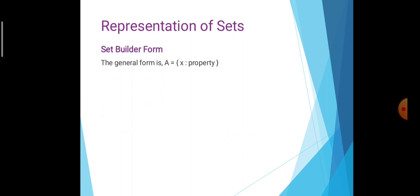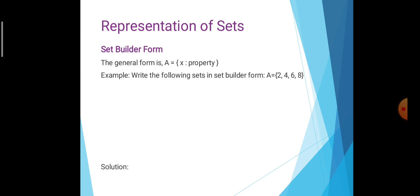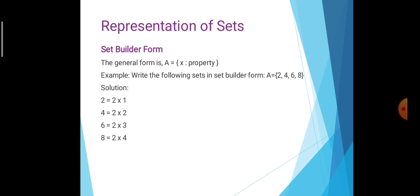Next, set builder form. Set builder form means the general form is A = {x : property}. There is a certain rule or certain property in set builder form. For example, write the following set in set builder form: A = {2, 4, 6, 8}. Observe: 2 = 2×1, 4 = 2×2, 6 = 2×3, 8 = 2×4. There is a particular property. So the set builder form is A = {x : x = 2n, n ∈ ℕ, 1 ≤ n ≤ 4}. Set builder form means there is a certain property or rule — here the rule is 2n.